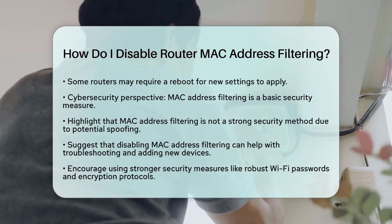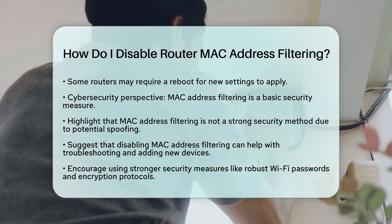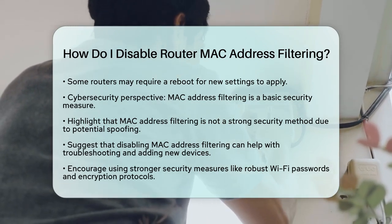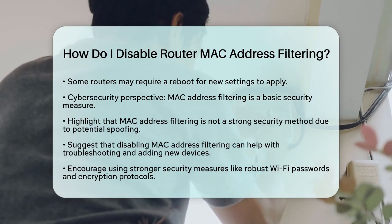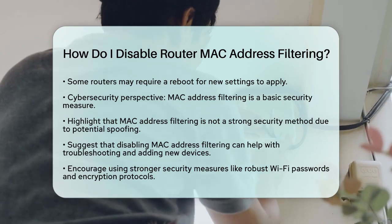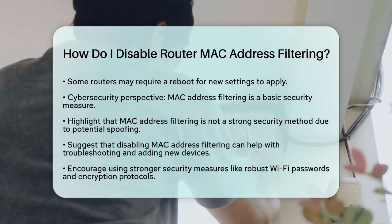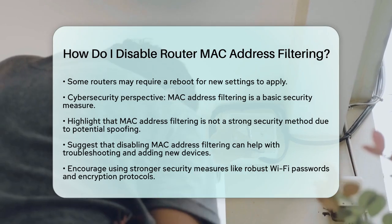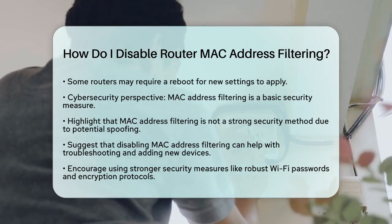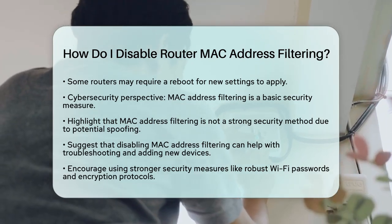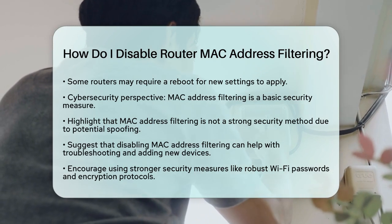In summary, to disable MAC address filtering: access your router's settings, locate the MAC filtering option, disable it, and save your changes. Combining this with other security measures will provide better protection for your network.